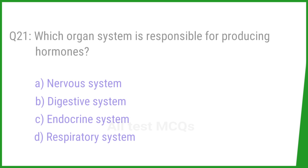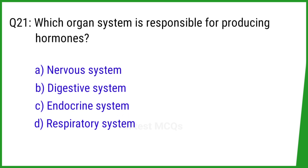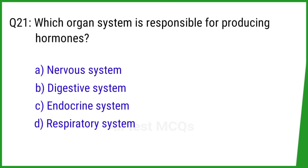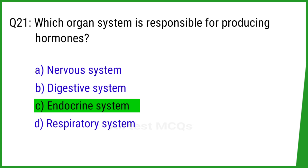Question number 21. Which organ system is responsible for producing hormones? The right answer is option C: Endocrine system.